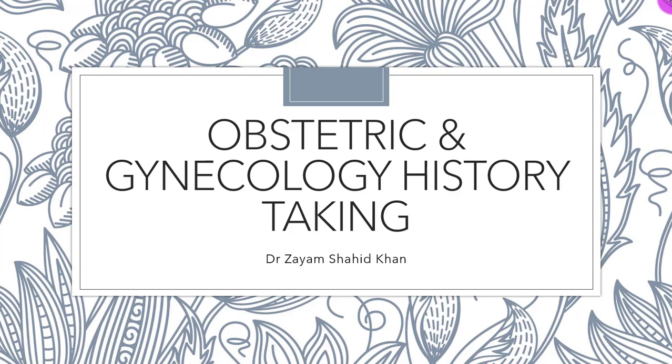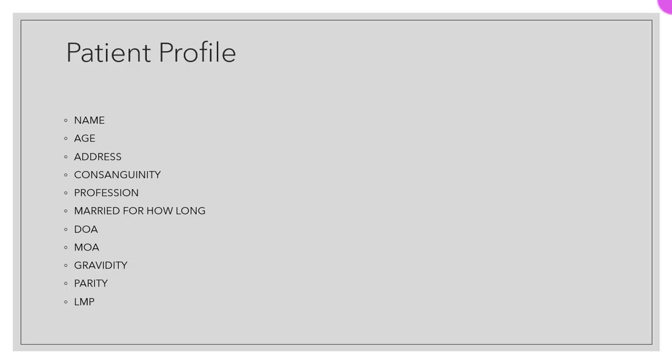We will start with the patient's profile. We will ask the name of the patient, her age, her address, whether her marriage was within family — with her cousin — this is called consanguinity — her profession, if she is a working woman, how long she has been married, date of admission to the hospital, and mode of admission, whether she came in emergency or through OPD and then was admitted.